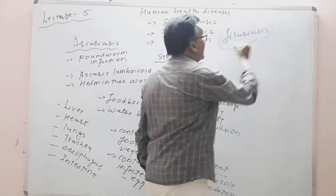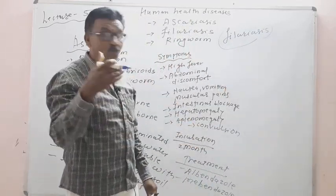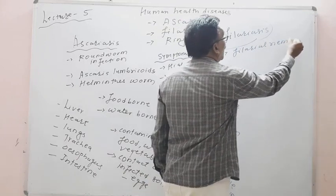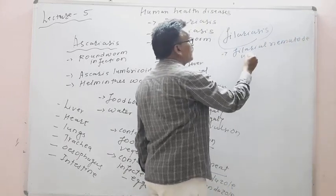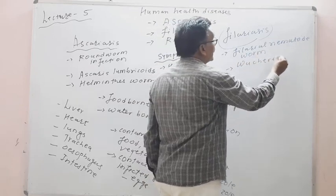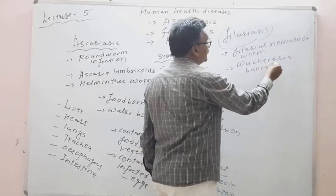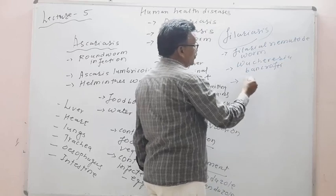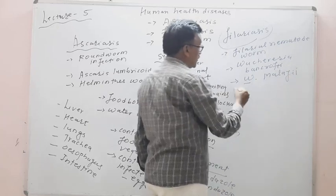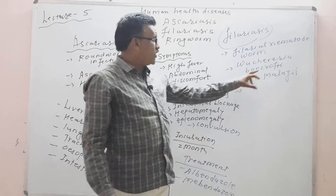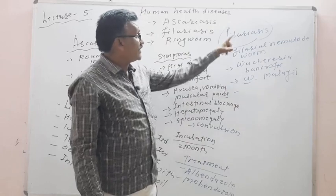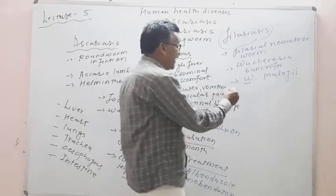Filariasis is caused by filarial nematode worms, specifically Wuchereria bancrofti and Wuchereria malayi. It causes lymphatic filariasis.